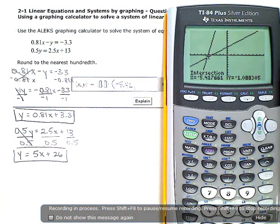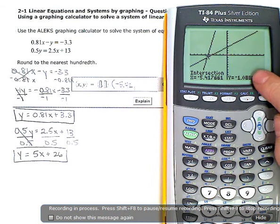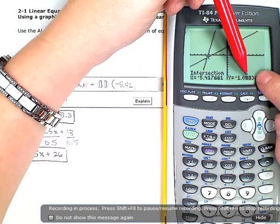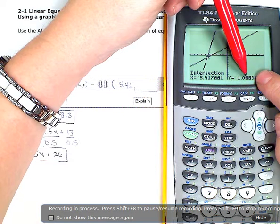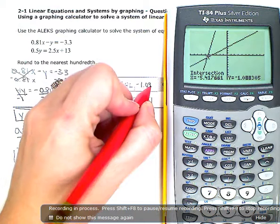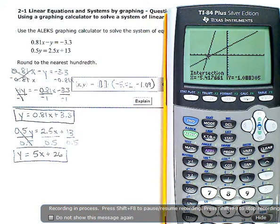And then this one, I want to keep two decimal places, the 0.8. But since the third one is bigger than five, I have to bump this eight up to nine. So, negative 1.09. And that's my final answer.